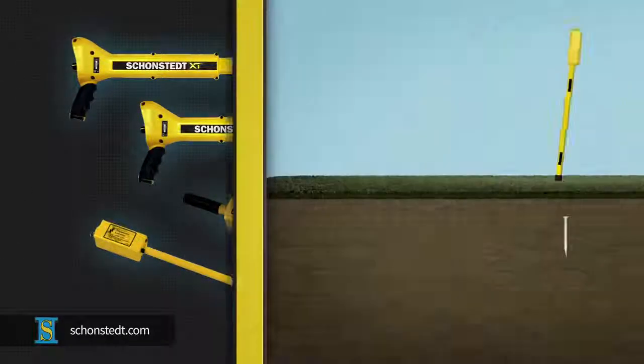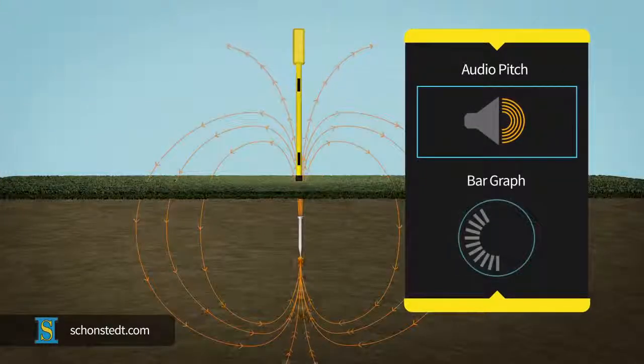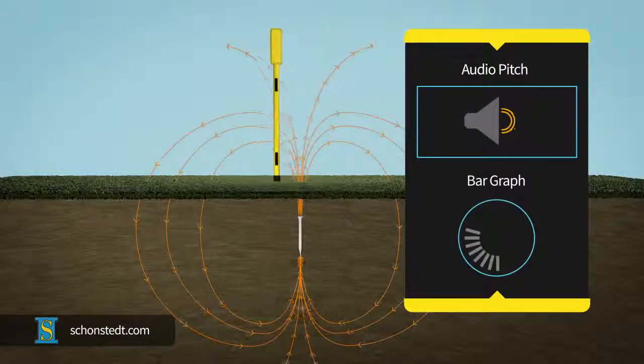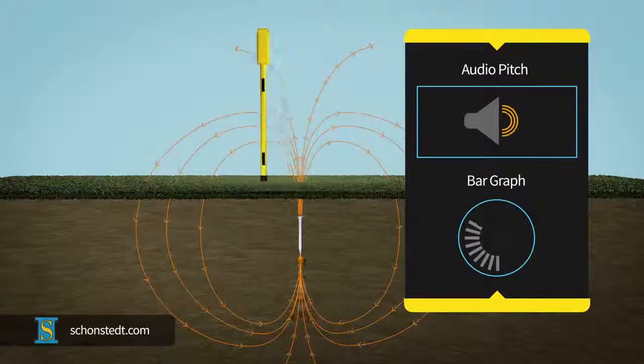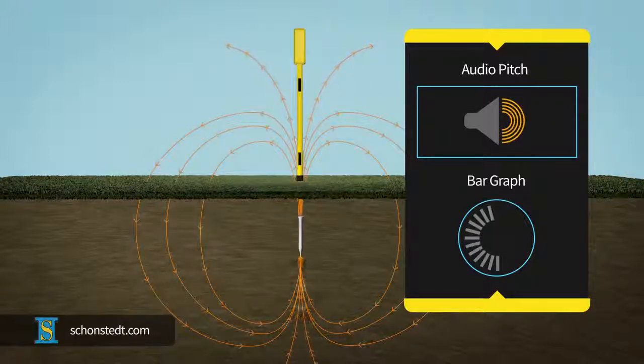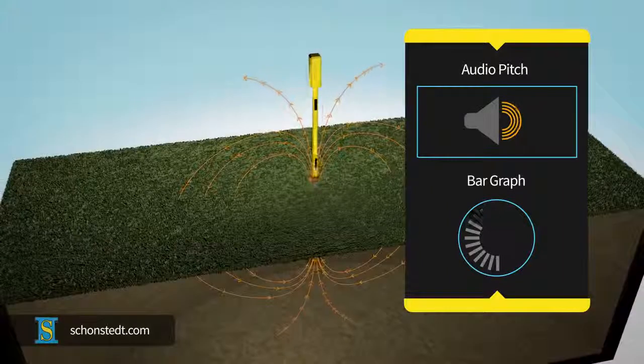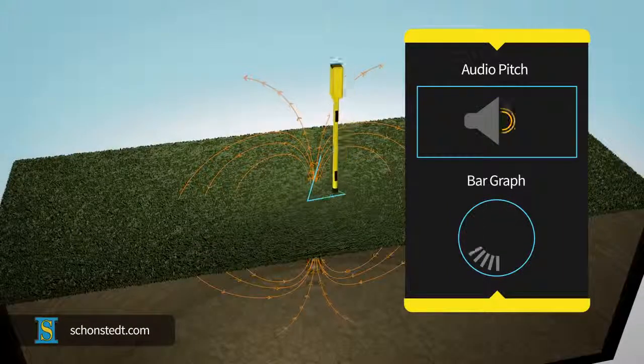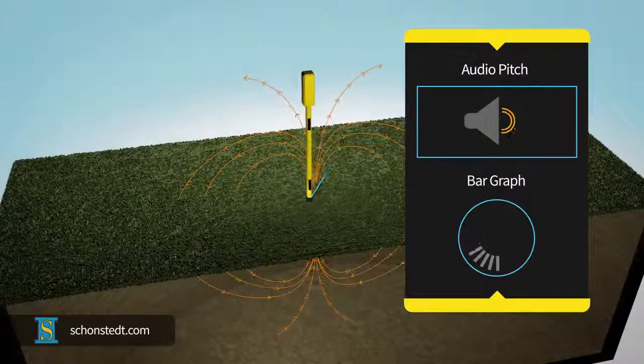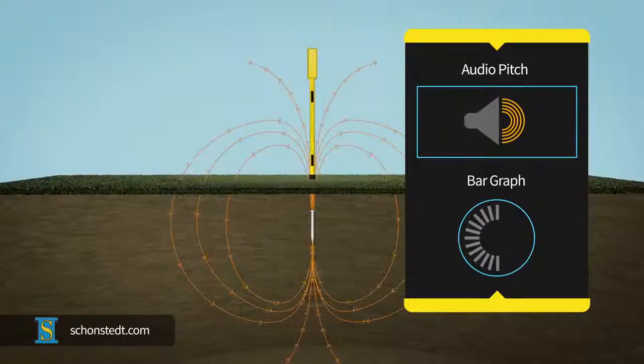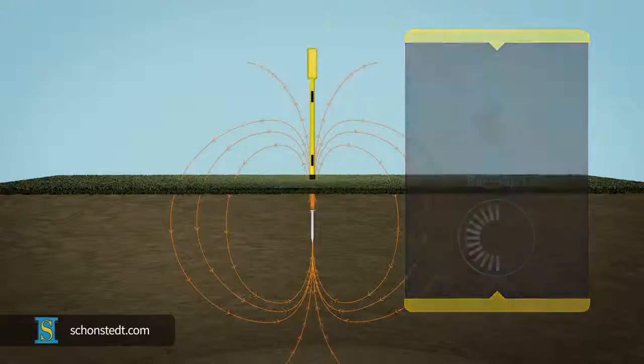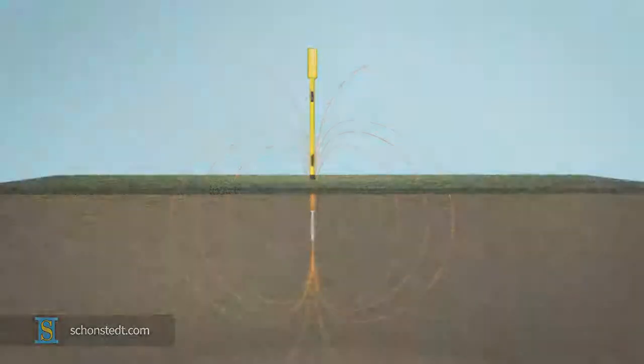The basic technique to locate a buried object with a magnetic locator involves approaching the object while listening to the pitch of the tone, and, if applicable, watching the bar graph on the display. Once near the object, small X-pattern movements help pinpoint the exact location of the target. Volume and sensitivity can be adjusted on all Schonstedt locators to accommodate various depths and sizes of targets, as well as background noise conditions.